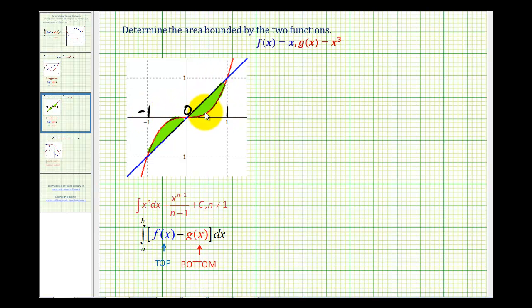Now if you didn't have a good enough graph to determine the x-coordinates of these points of intersections, what we'd have to do is set these two functions equal to each other and solve for x. And I'm going to go ahead and show that.